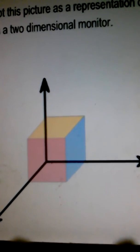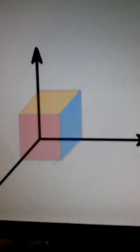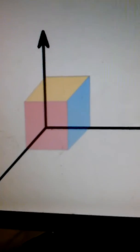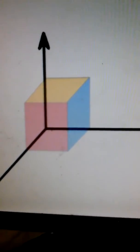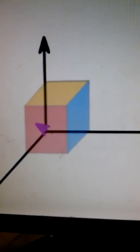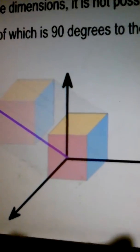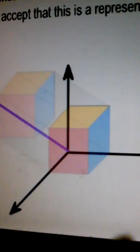Yet we accept this picture as a representation of three dimensions displayed on a two-dimensional monitor. In three dimensions, it is not possible to have four axes, each of which is 90 degrees to the other three.